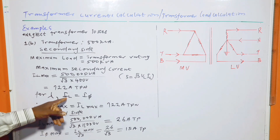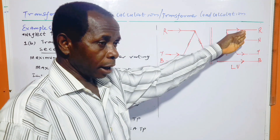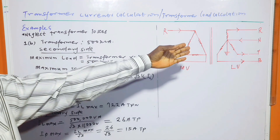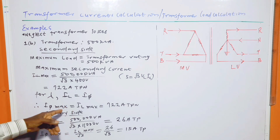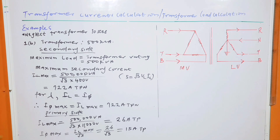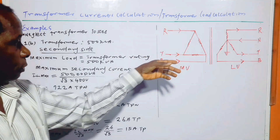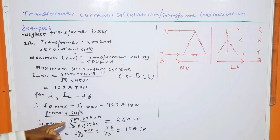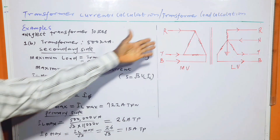For star connection I_line = I_phase, so the maximum phase current equals the maximum line current — both are 722 A. Moving to the primary side, the supply voltage is 11 kV, and substituting 11,000 into the formula gives a maximum primary line current of 26 amperes, three-phase.